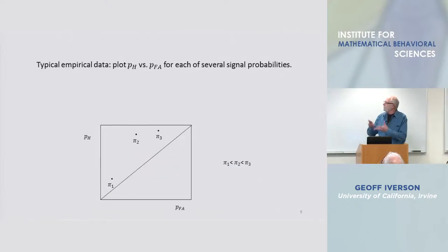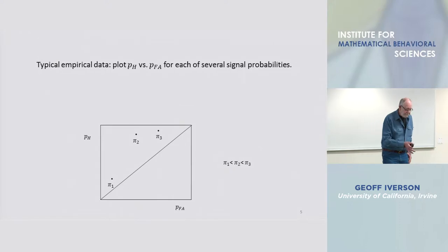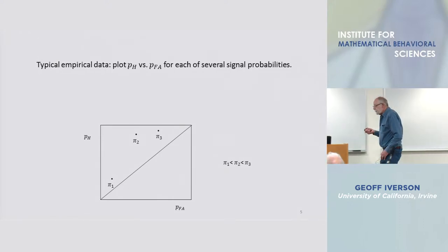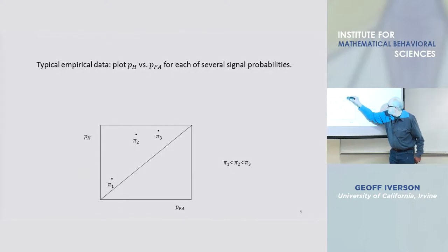Here's a small-scale typical experiment where from one block of trials to another to another one varies the probability of signal trial.